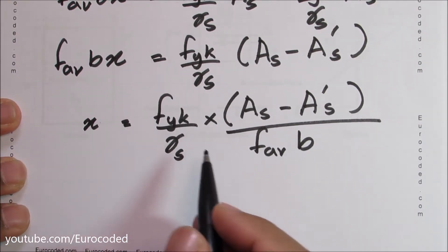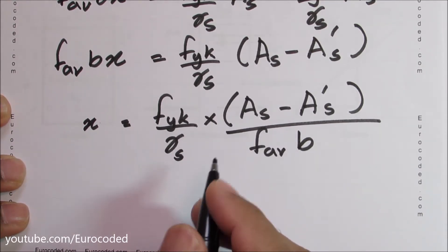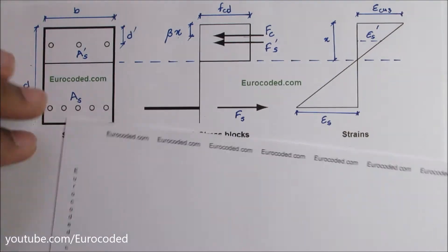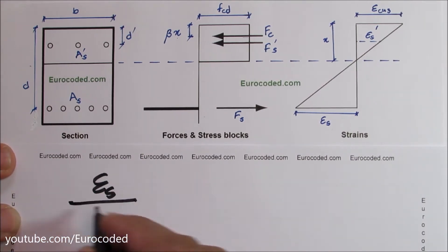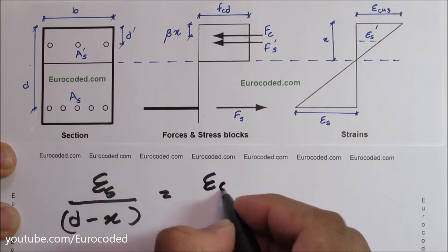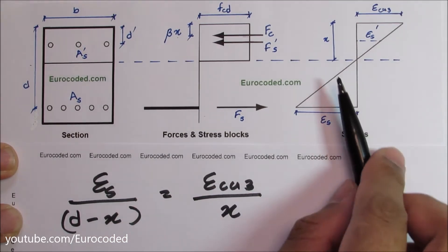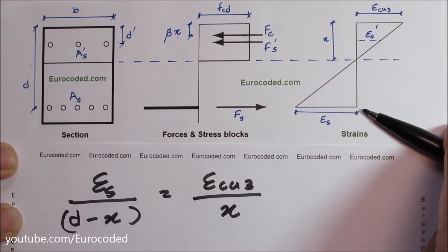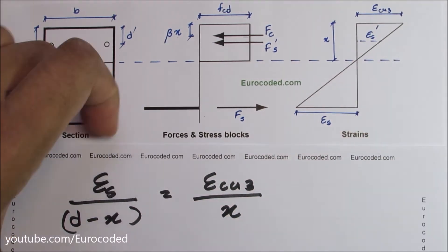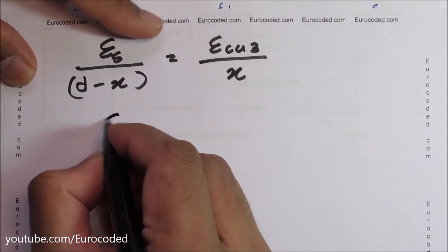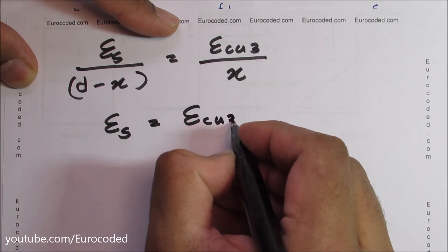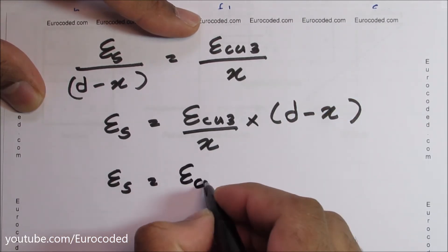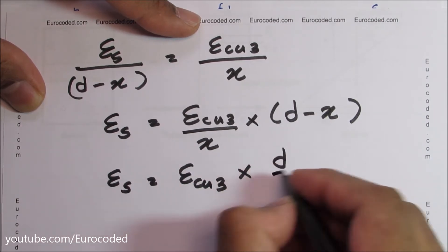We need to check that the strain in the bottom reinforcement is sufficient to cause yielding. Using the strain diagram and comparing similar triangles, we can write εS over (D minus X) is equal to εCu3 over X. Rearranging, εS is equal to εCu3 over X times (D minus X), which equals εCu3 times (D/X minus 1).